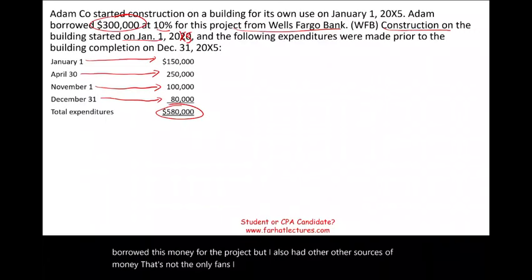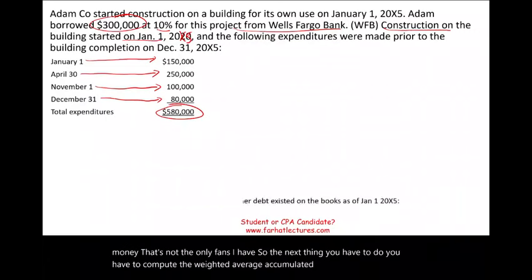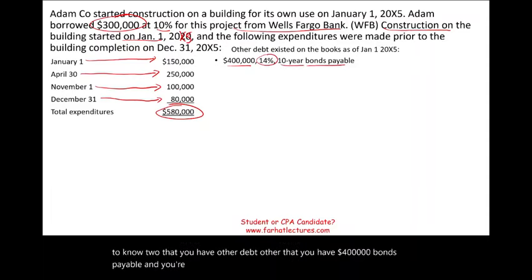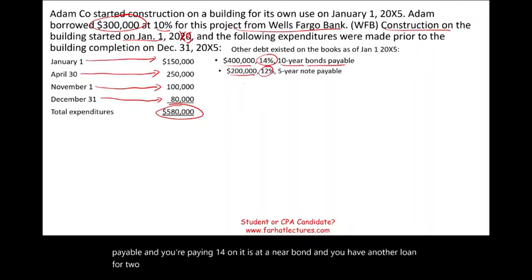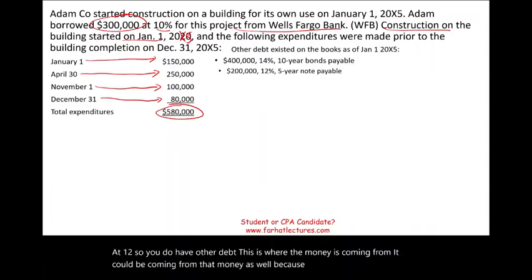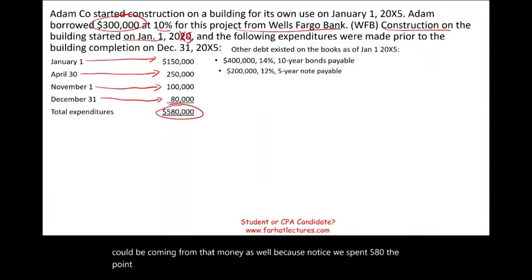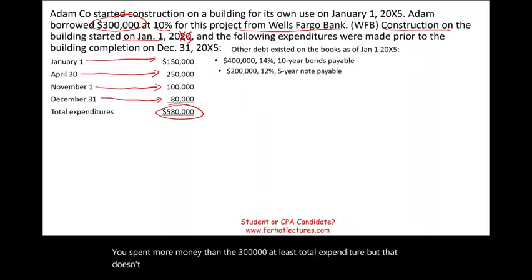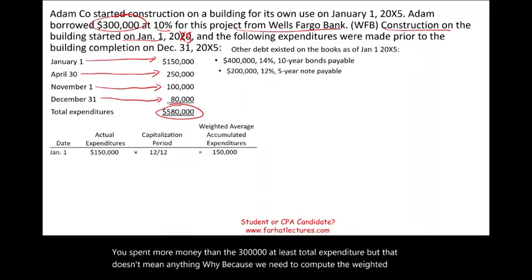You also have other debt. You have $400,000 in bonds payable at 14% — a 10-year bond — and another loan for $200,000 at 12%. So you do have other debt; the money for the project could be coming from those sources as well. Notice we spent $580,000 total, which exceeds the $300,000 specific borrowing. We need to compute the weighted average accumulated expenditure.